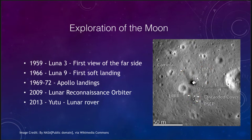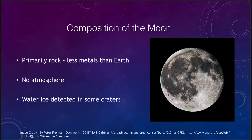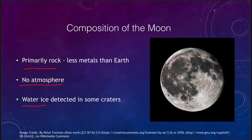The moon is composed primarily of rock; it has less metal than the earth and no atmosphere to speak of. However, water ice has been detected in some craters. Any water placed on the moon would be vaporized by the heat of the sun during the day, and with no atmosphere the moon cannot hold on to that water vapor. However, near the poles there are craters that are permanently shadowed, and it has been found that water ice exists in some of those craters.